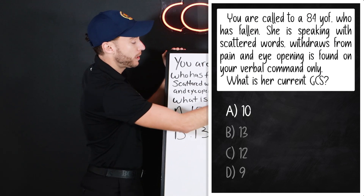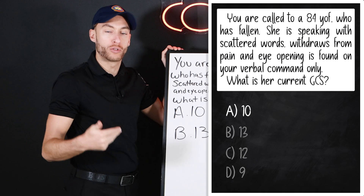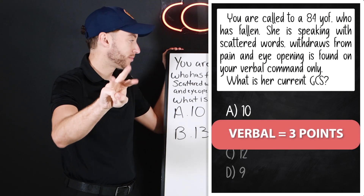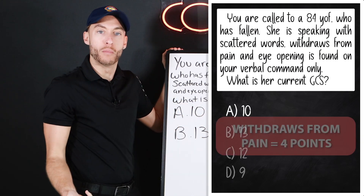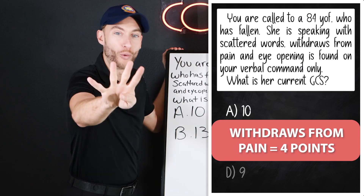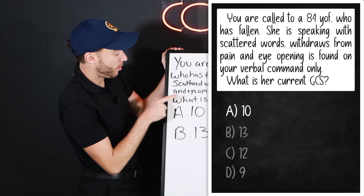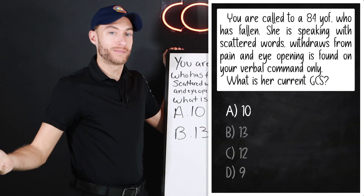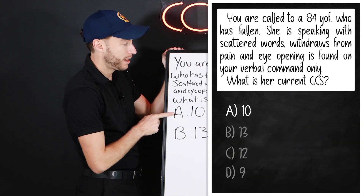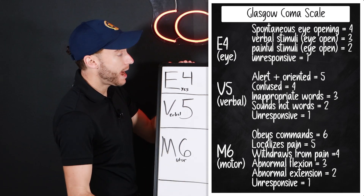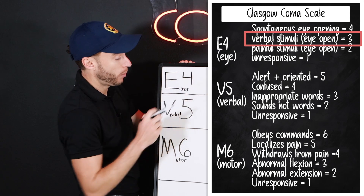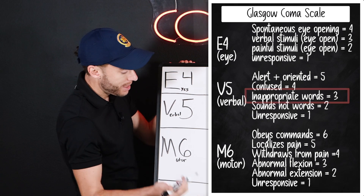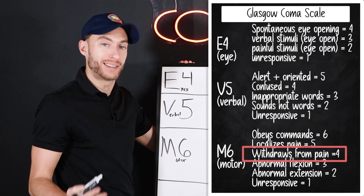She's speaking with scattered words — inappropriate words — meaning that's three points. That's the verbal. Withdraws from pain is the motor, that's going to be four. Eye-opening on verbal command is a three. Three and four and three, we got 10. The patient had eye-opening to verbal stimulus — three points. Inappropriate words — three points. Withdraws from pain — four points. That's how we got to 10.